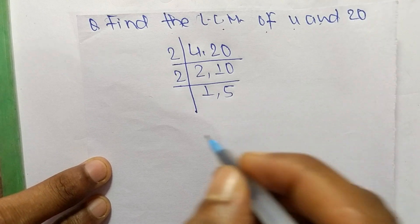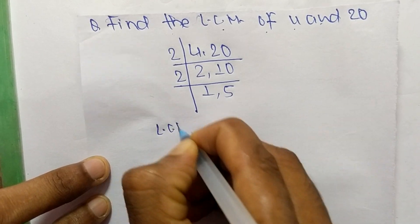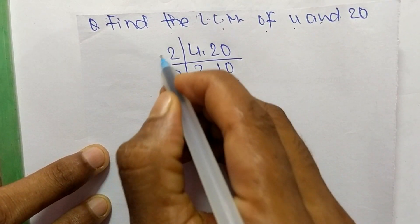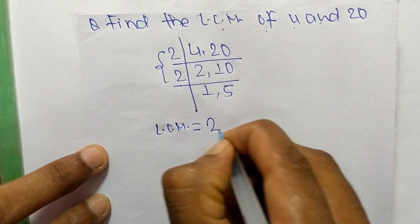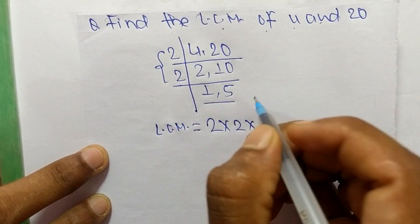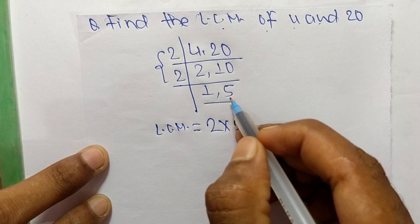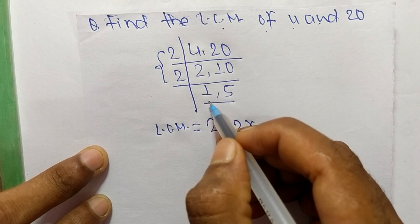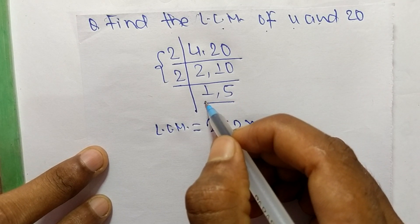So now we get the LCM. LCM is equal to, from this part it is 2 times 2, and from this part we take only 5 and we neglect 1 because by multiplying any number with 1 we get the same result.